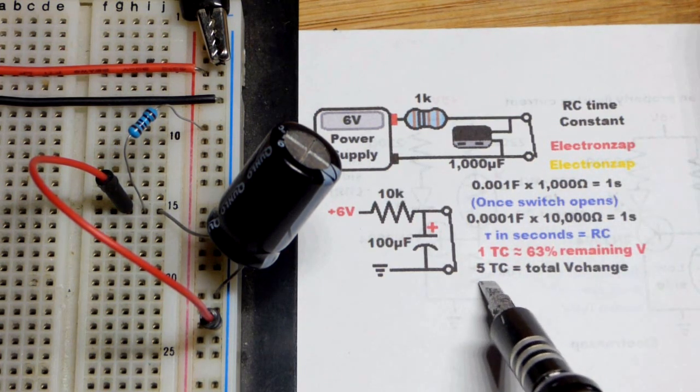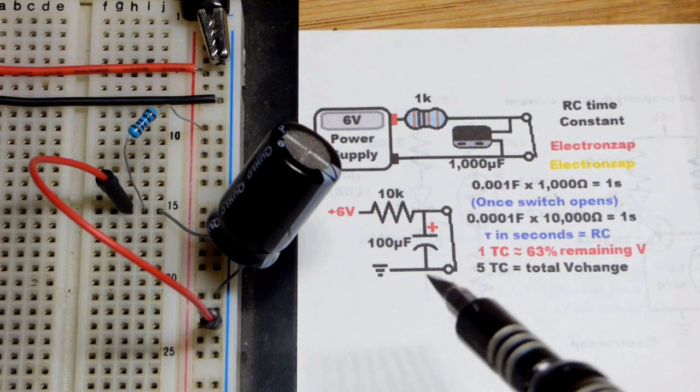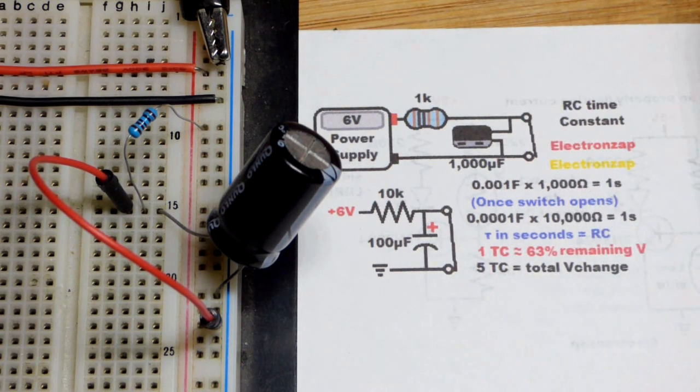And ultimately, after about five of them, you're going to get from the original starting voltage to basically your final voltage. You don't really count the little bit of trickling that goes on afterwards.